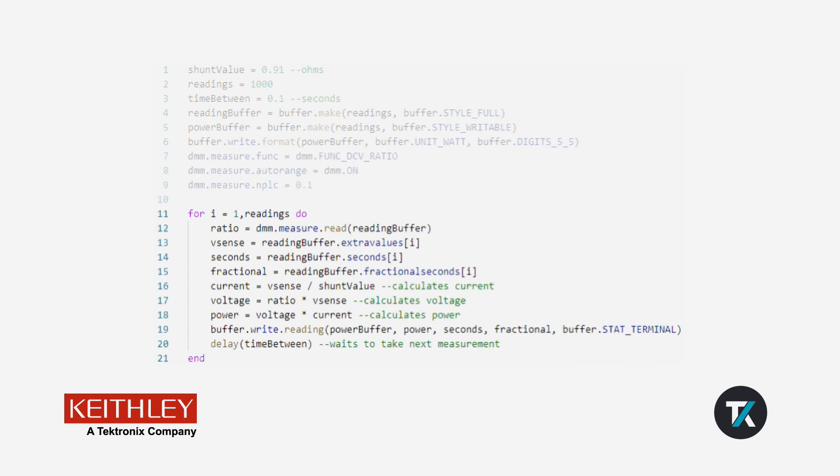Finally, we will use a for-loop structure to make the measurements. We take the ratio measurement and store it in the variable ratio. Because we set up the reading buffer as full, the sense voltage is stored in the extra field. We will store that value to the vSense variable.